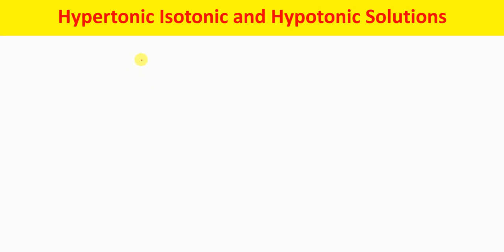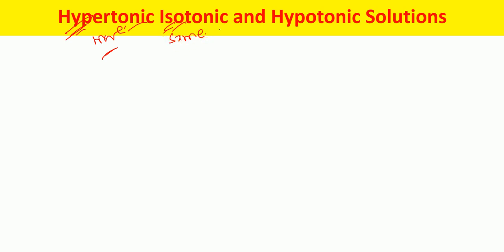In this lecture, I'm going to talk about hypertonic, isotonic, and hypotonic solutions — the differences between them and what happens to the cell when it is placed in each kind of solution. The term 'hyper' refers to more, 'iso' refers to same, and 'hypo' refers to less or low.